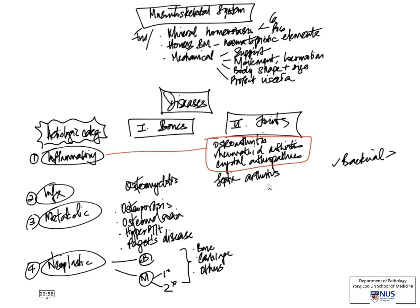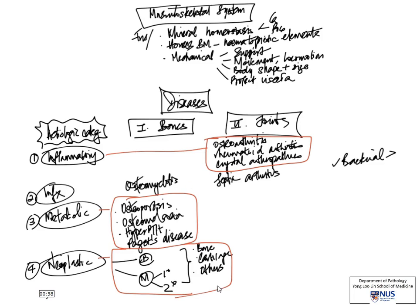Just to recap: joints are mainly affected by inflammatory conditions; bones by metabolic and neoplastic conditions; and infections can be seen in either.